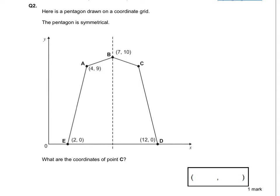Now in question two we've got a pentagon. It's an irregular pentagon because the lengths of the sides and angles are different, but it's definitely a pentagon — one, two, three, four, five sides. It's got a line of symmetry down the middle. So we're looking for the coordinates of point C.